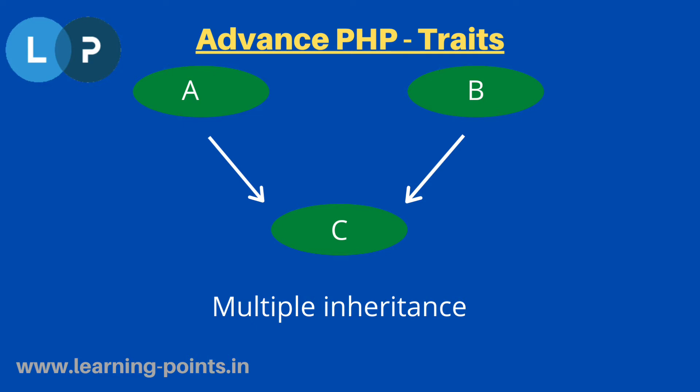Now what if we want to use multiple inheritance? Here, class A and class B are two separate classes and we want to access the properties of both. The problem is that PHP does not support multiple inheritance directly. So how can we achieve this?